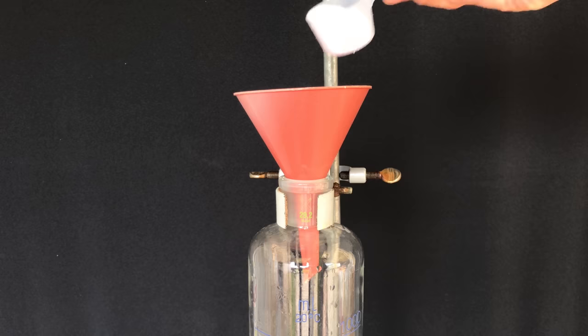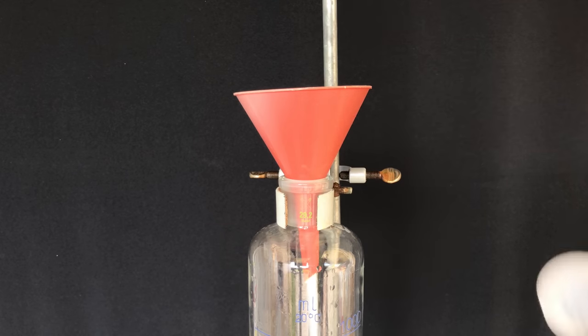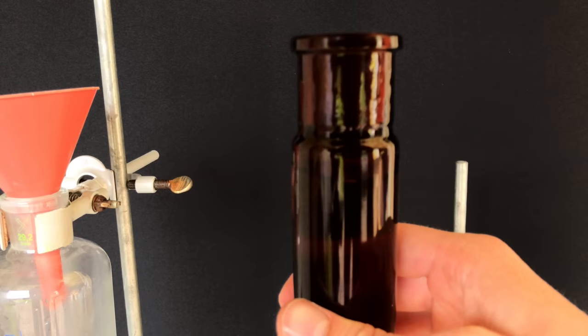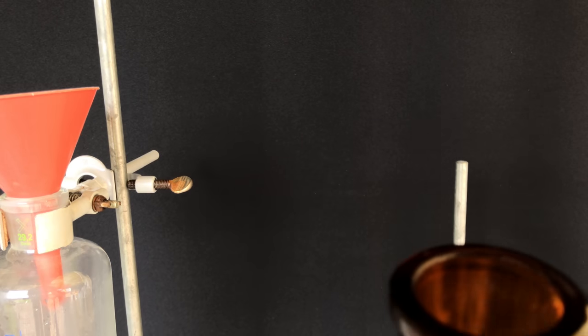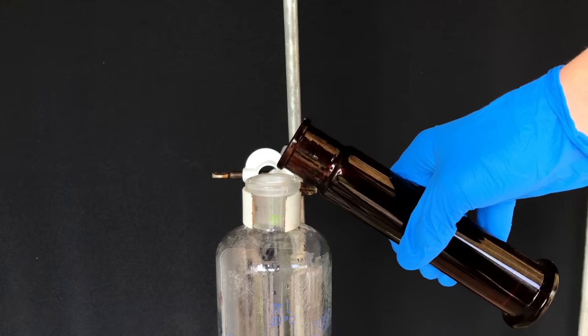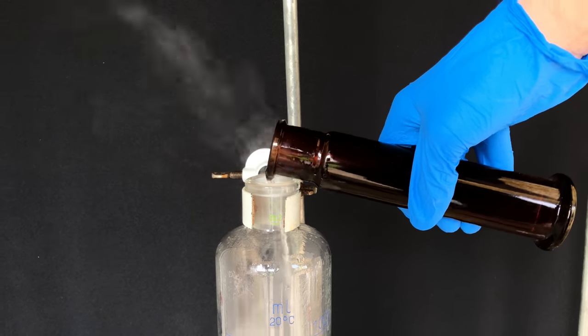After about half an hour, our silicon tube started leaking and therefore I stopped the hydrogen chloride generation. If it did not leak, I would have continued for about 20 more minutes. The contents of the gas washing bottle fumed profusely. This was due to dissolved hydrogen chloride.